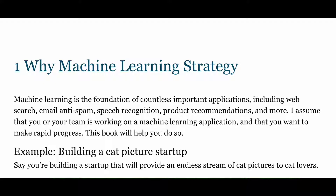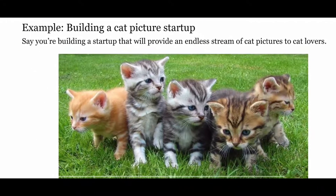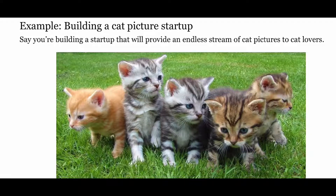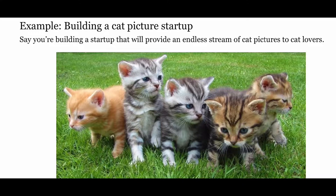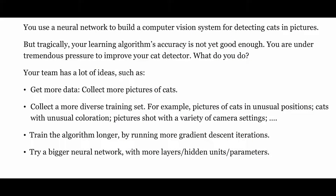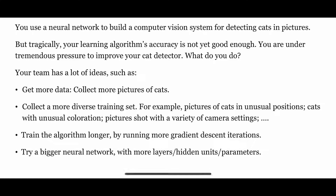Andrew says he assumes that you or your team is working on a machine learning application and that you want to make rapid progress, and this book will help you do so. He starts off with an example of building a cat picture startup — say you're building a startup that will provide an endless stream of cat pictures to cat lovers. You use a neural network to build a computer vision system for detecting cats in pictures, but tragically your learning algorithm's accuracy is not yet good enough. You are under tremendous pressure to improve your cat detector. What do you do?